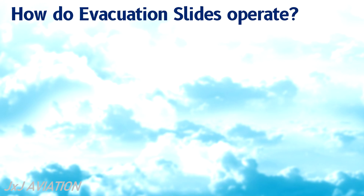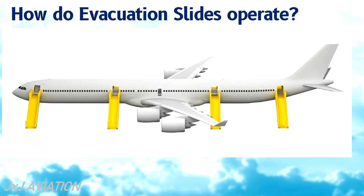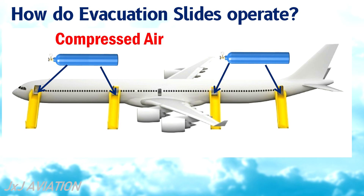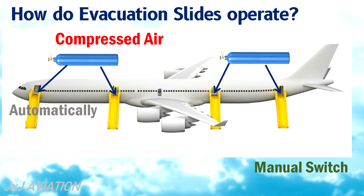How do the evacuation slides operate? At the bottom of the door structure, a cylinder filled with compressed air is installed. This air is used for the inflation of the slides, which should happen automatically when required. If the inflation did not occur, a manual switch is provided to initiate the inflation of the slide.